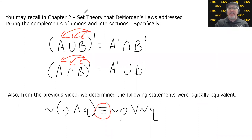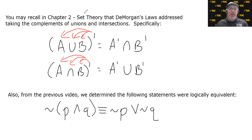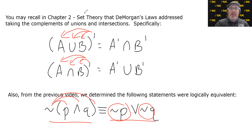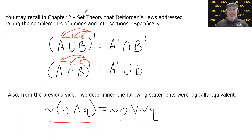The triple-lined equal sign is a very common symbol for the phrase 'is logically equivalent.' We showed that these were logically equivalent. And if you'll notice, we had the same phenomenon — when we distribute the negation, it negated the simple statements, but the connective in the middle also got turned upside down, almost as if the negation were distributed to it and told it to turn upside down. This is the exact same story as DeMorgan's Laws for set theory.